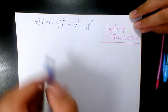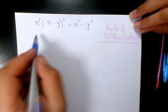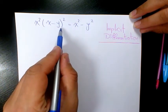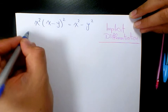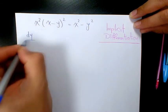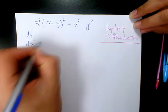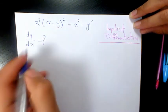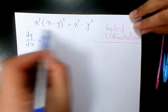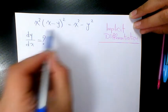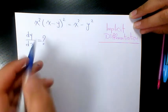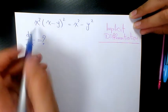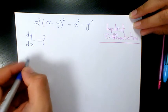The first thing I'm going to do is take the derivative of this part, which means I need to use the product rule. So it's going to be the derivative of x squared...